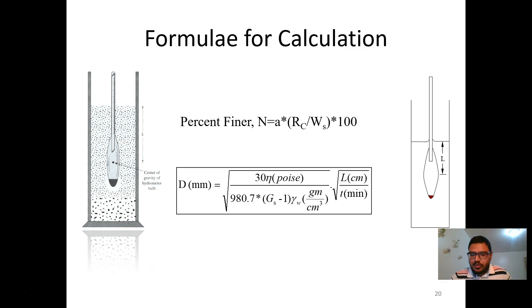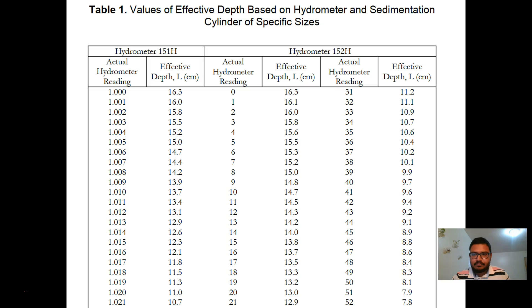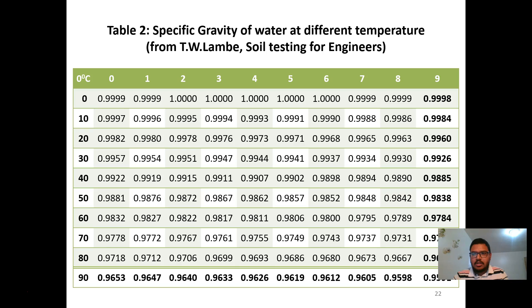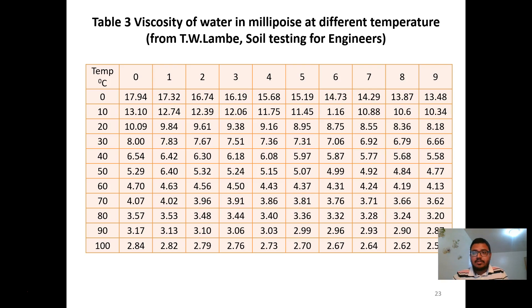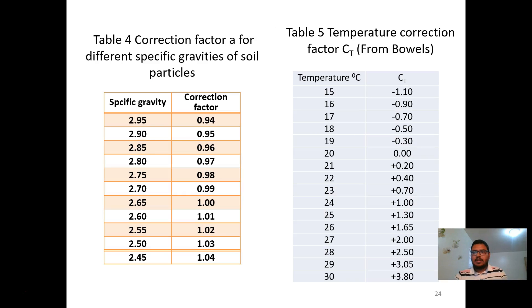For the calculation, we need to have some standard charts and tables. Values of effective depth based on hydrometer reading can be obtained from this table. Specific gravity of water at defined temperatures can be found in this table. This table shows the viscosity of water at defined temperatures. This table shows the temperature correction factor and the correction factor for specific gravity.